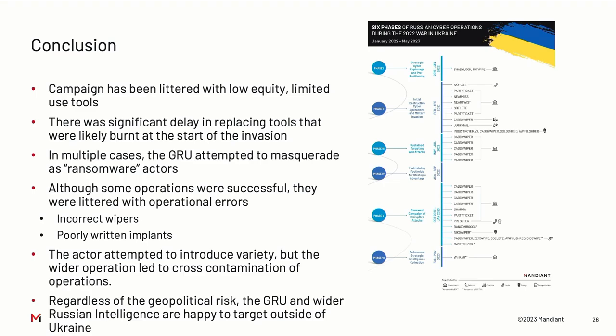Q: What vectors were they using to get into environments initially? A: It was a bit of everything. Some of this was probably started by phishing. There were others where they had prolonged access for considerable time before. We weren't able to identify the initial access vector for everything.